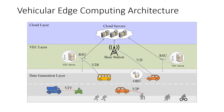In this figure, you can see a generic vehicular edge computing architecture. After gaining enough experience in the edge computing domain, we focused on Intelligent Transportation Systems. This work is proposed for multi-access, multi-tier vehicular edge computing systems. Again, we have three tiers here, and we have two options for broadband internet access. That's why this is a multi-access architecture.